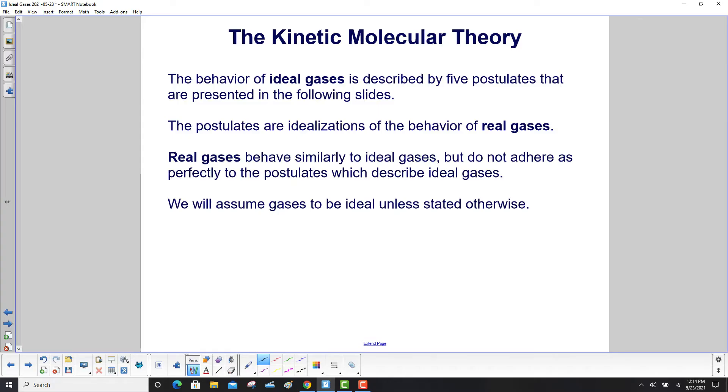The behavior of ideal gases is described by five postulates that are presented in the following slides. The postulates are idealizations of the behavior of real gases. Real gases behave quite similar to ideal gases, but do not adhere as perfectly to the postulates which describe the ideal gases. We will assume gases to be ideal, unless stated otherwise.